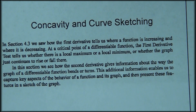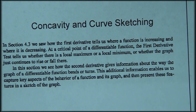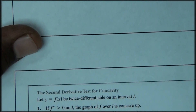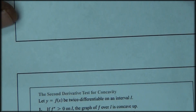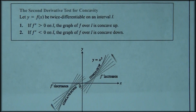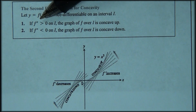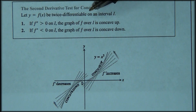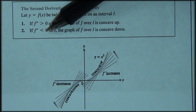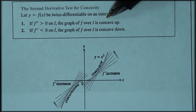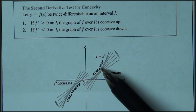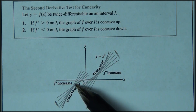Hello. In this session we'll take a look at concavity and curve sketching. We'll see how the second derivative gives information about the way the graph of a differentiable function bends or curves. The second derivative test for concavity states: if the second derivative is positive, the graph is concave up; if the second derivative is negative, the graph is concave down. Concave up means the curve can hold water; concave down means it cannot.